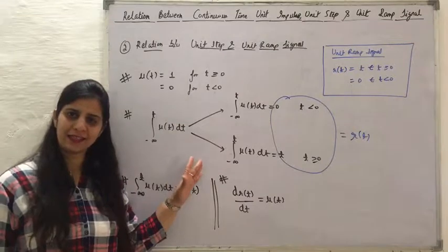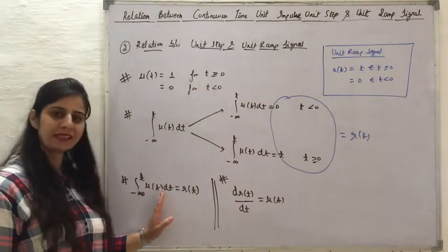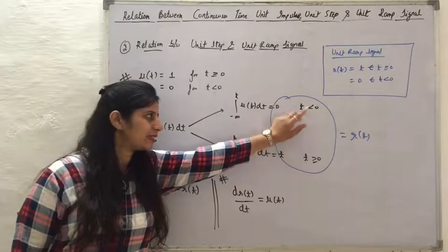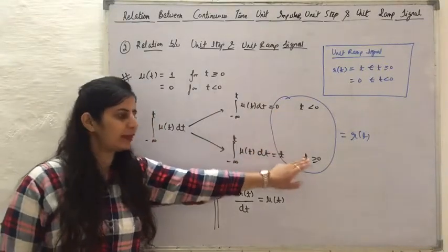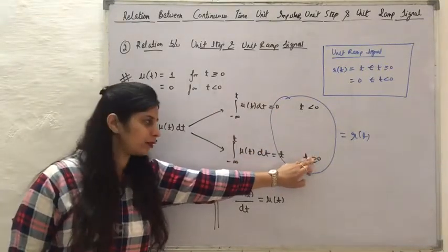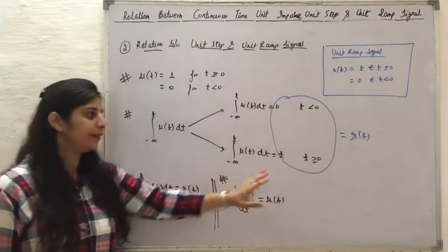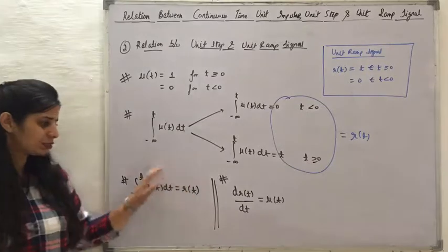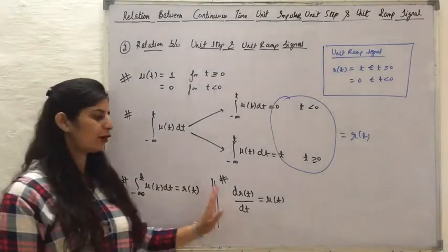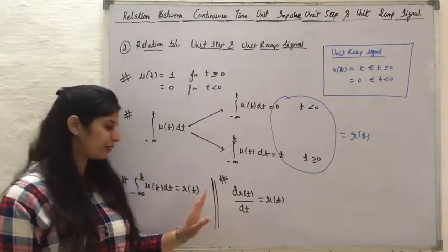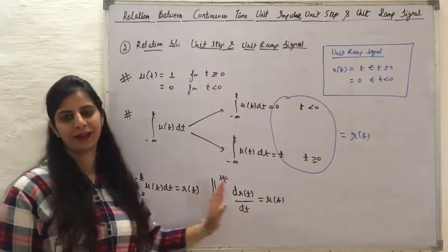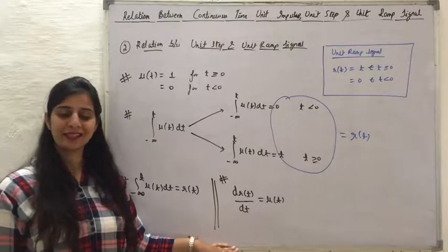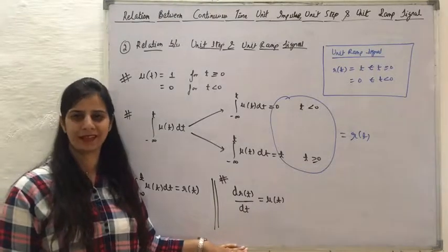When we integrate the unit step signal with a limit t: when t is less than 0, the result is 0; and when t is greater than or equal to 0, the result is t — the function r(t). The inverse is also true: when we differentiate r(t), we will get u(t). This defines the relationship between the unit step signal and the unit ramp signal.